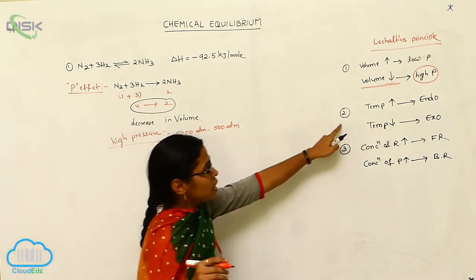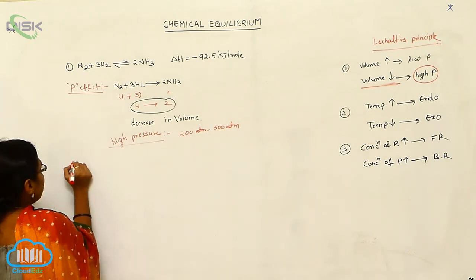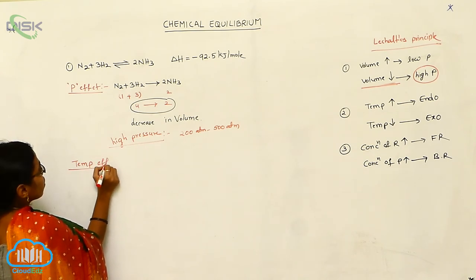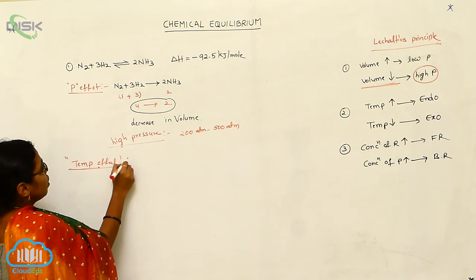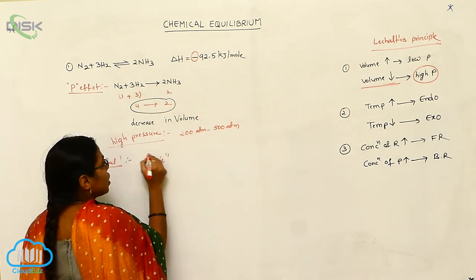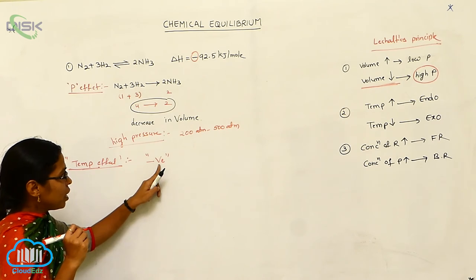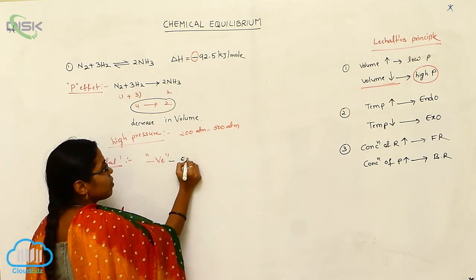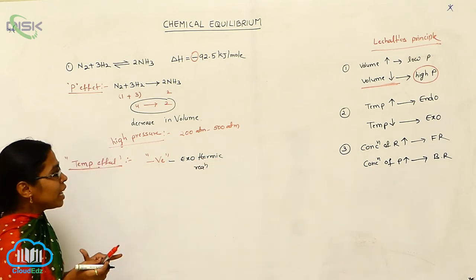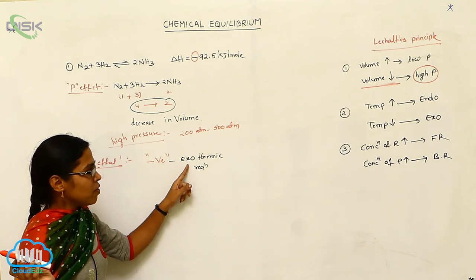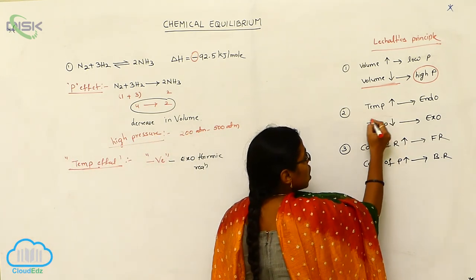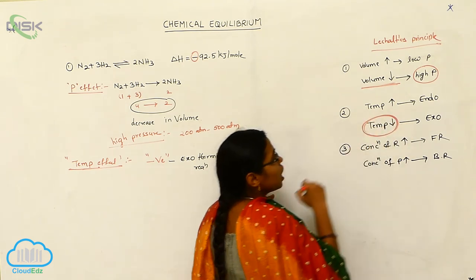The second effect to discuss is the temperature effect. Since the reaction has a minus sign for delta H, it is an exothermic reaction — heat is evolved. For an exothermic reaction, increasing temperature would disfavor the forward reaction. Therefore, we need low temperature as the favorable condition for Haber's process.